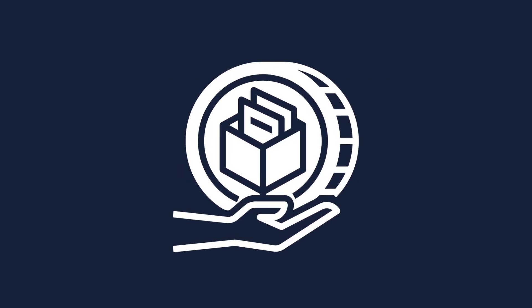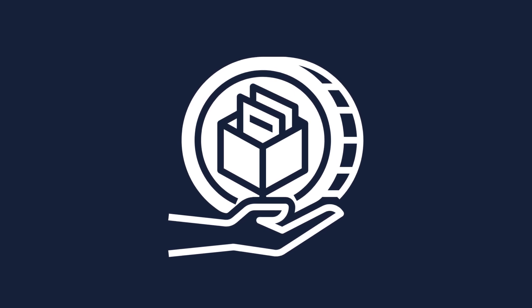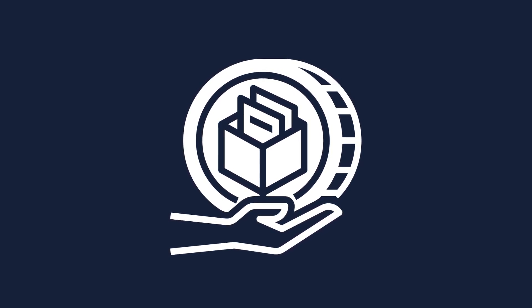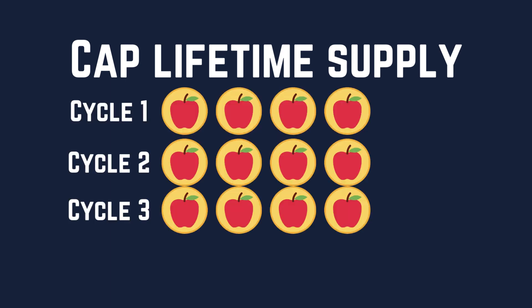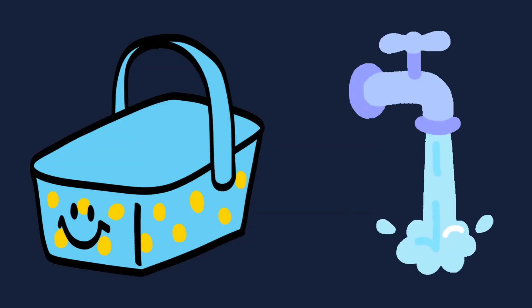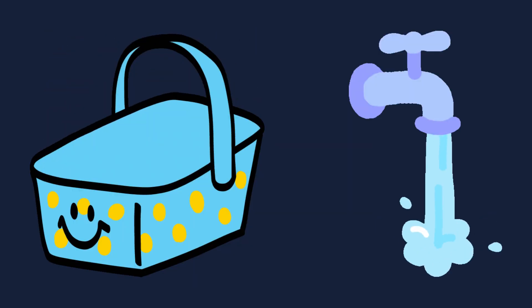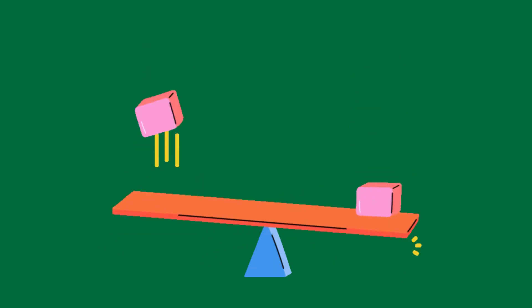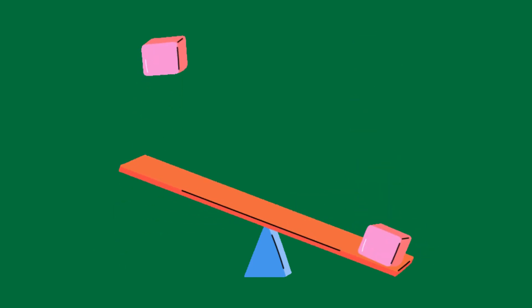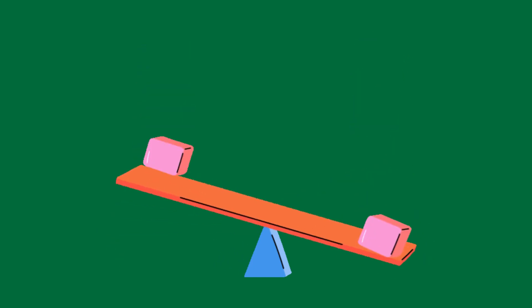That, ladies and gentlemen, is tokenomics in a nutshell — a simple play on supply and demand. But with cryptocurrency projects, things can get really complicated. We could cap the lifetime supply of the apple token, releasing a certain decreasing supply each cycle. We could peg an apple token to the price of anything — a basket of other fruits or water — which adds another utility. Or five percent of every apple token sold could go back into a common liquidity pool that functions as a buffer for supply.